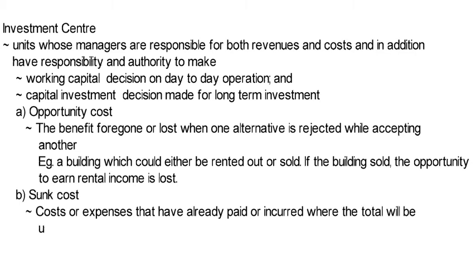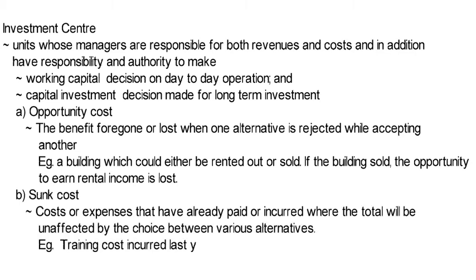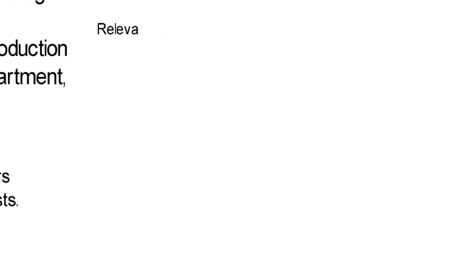Opportunity cost is defined as the benefit foregone or lost when one alternative is rejected while accepting another. For example, a building which could either be rented out or sold — if the building is sold, the opportunity to earn rental income is lost. Sunk cost is defined as costs or expenses that have already been paid or incurred, where the total will be unaffected by the choice between various alternatives. For example, training cost incurred last year.